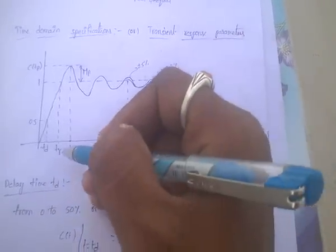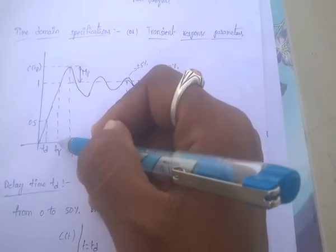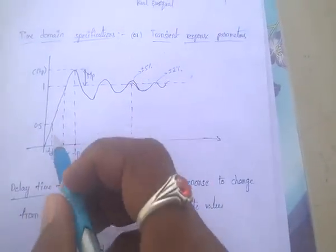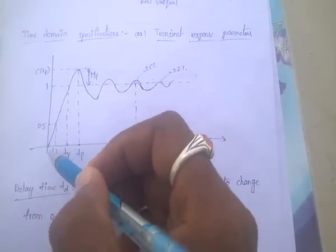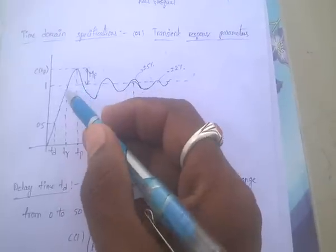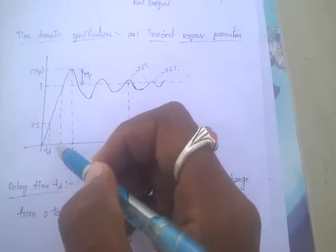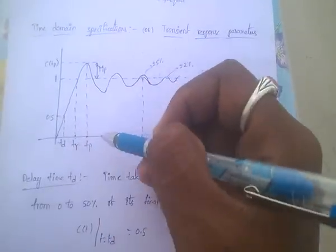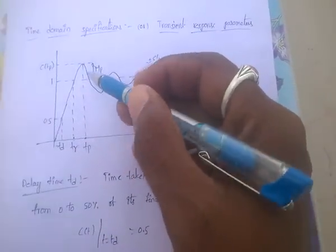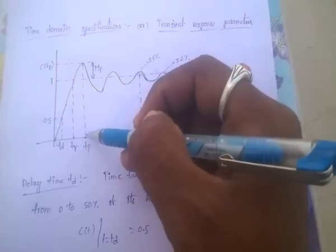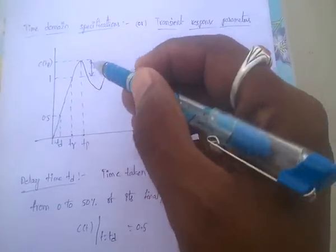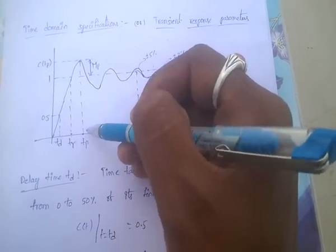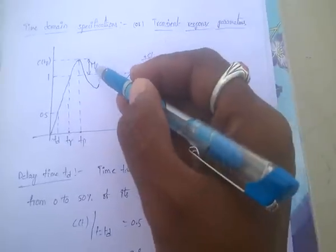TR means rise time — the time taken by the response to reach from 0 to 100% of the final value. And TP (peak time) is the time taken by the response to reach the maximum value.